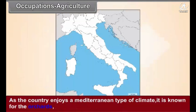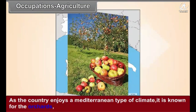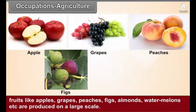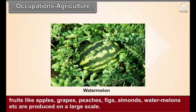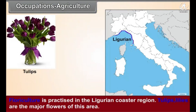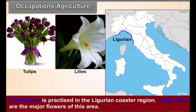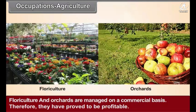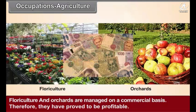As the country enjoys a Mediterranean type of climate, it is known for its orchards. Fruits like apples, grapes, peaches, figs, almonds, watermelons, etc. are produced on a large scale. Floriculture is practiced in the Ligurian coastal region; tulips and lilies are the major flowers of this area. Floriculture and orchards are managed on a commercial basis and have therefore proved to be profitable.